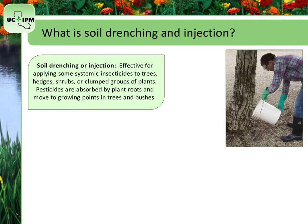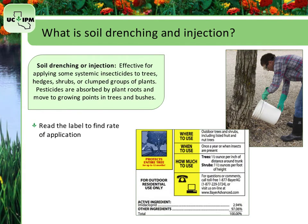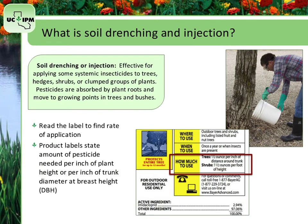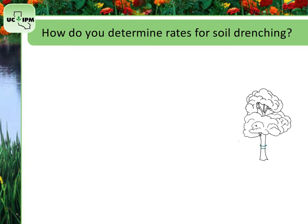For soil injection and soil drenching, first read the label to find the rate of application. Product labels usually state the amount of pesticide needed per inch of plant height or per inch of trunk diameter at breast height, or DBH. For treating individual trees or shrubs, you can calculate the application rate using either the plant height or the DBH.